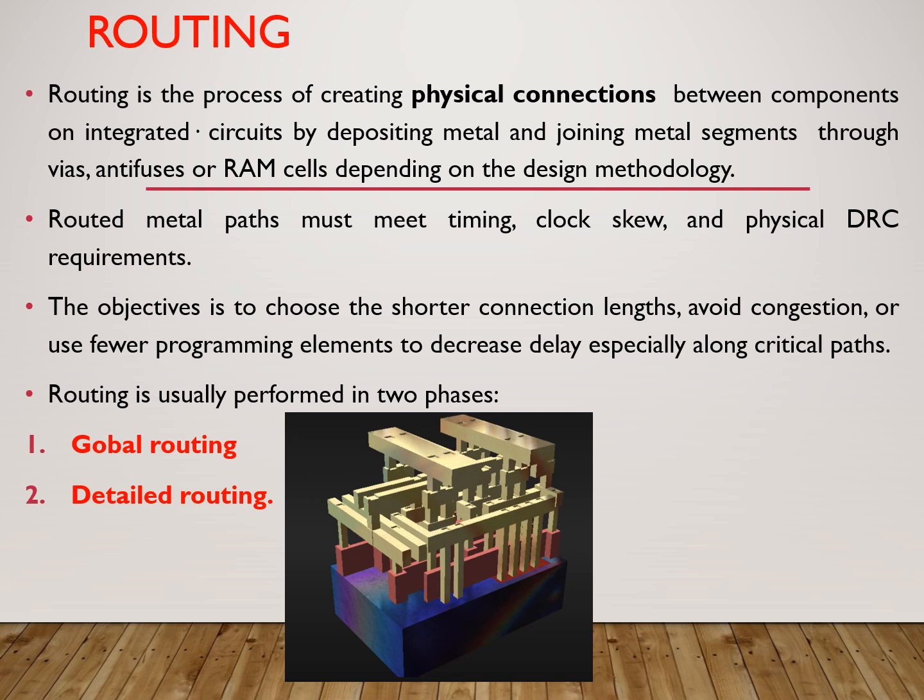Routing is usually performed in two phases: one is global routing and the other is detailed routing. The routing is not done in one particular layer — it has many layers. From layer 1 up to even more than 10 layers, they will add layers to make connections between two components, as this diagram clearly shows.